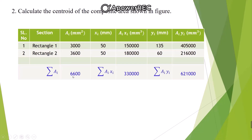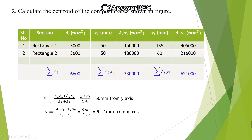Find the sum of all areas: Σai = 6600 mm². The sum of ai·xi = 330,000 and the sum of ai·yi = 621,000. Using the formula: x-bar = Σai·xi / Σai = 330,000 / 6600 = 50 mm from the Y-axis. y-bar = Σai·yi / Σai = 621,000 / 6600 = 94.1 mm from the X-axis. This is the procedure for finding the centroid of a composite section.